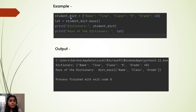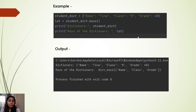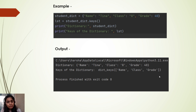Let's have a look at an example. Here we have a student dictionary with keys: name, class, and grade. Each key has a certain value — the name key has the value 'Tina', and so on. When we use student_dictionary.keys(), we get an output with the list of all the keys present in the dictionary.